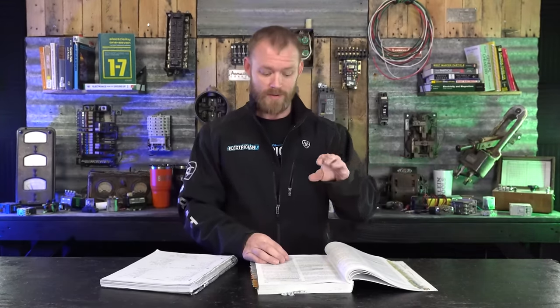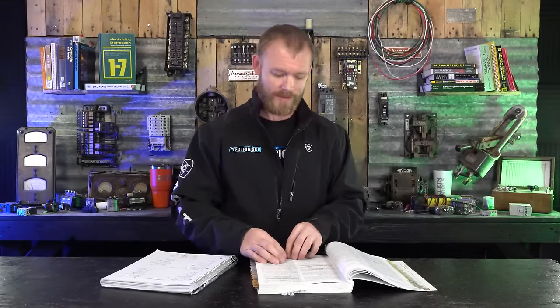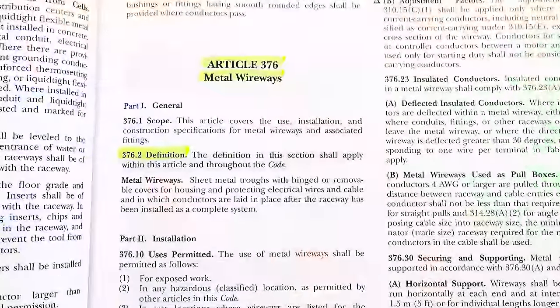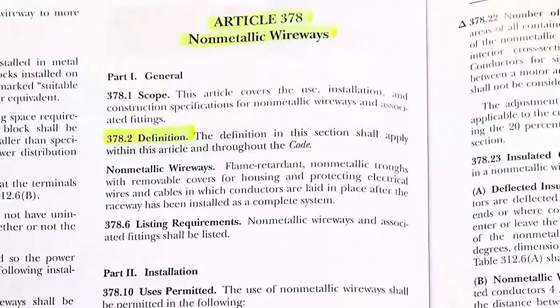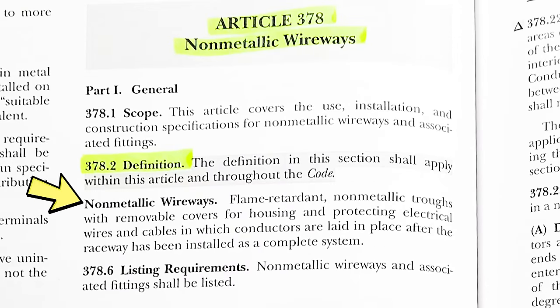You're not going to find the definition in the beginning where all of the other definitions are of things that apply pretty much throughout all of code. You're going to find the definition within the article. And that's going to happen a lot of places in code with a lot of these words. So the definition of a metal wire way is a sheet metal trough with hinged or removable covers for housing and protecting electrical wires and cable and in which conductors are laid in place after the raceway has been installed as a complete system. So plastic, pretty much the same thing. Non-metallic is a flame retardant non-metallic trough with removable covers and housing to protect electrical wires and cables in which conductors are laid in place after the raceway has been installed as a complete system. So same thing, just one of them is metal, one of them is not.